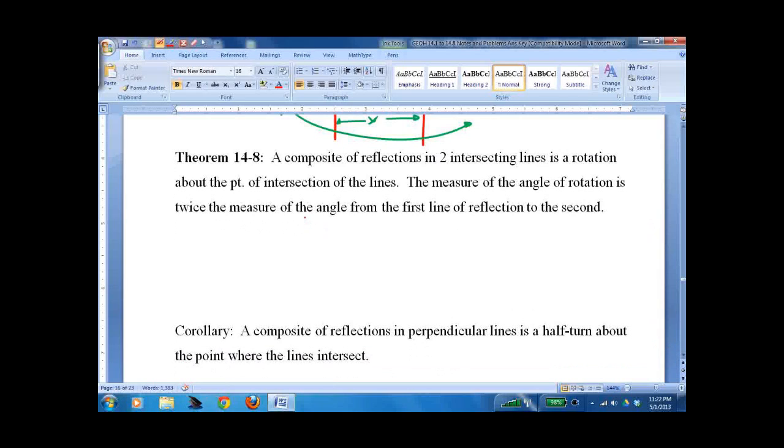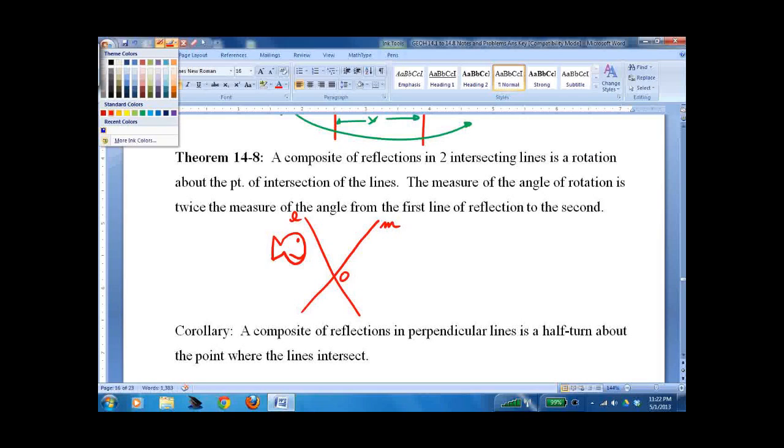This one's a little tricky to draw. It's not tricky to understand. We have two lines that intersected O. This is one of my favorites to draw is the goldfish. Give him a smile and some eyes. We reflect him across line L first and then line M. Now they're intersecting lines. They're not at 90 degree angles. They're just intersecting. So if I do this properly.